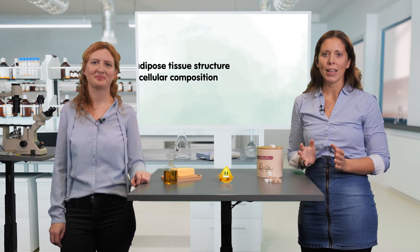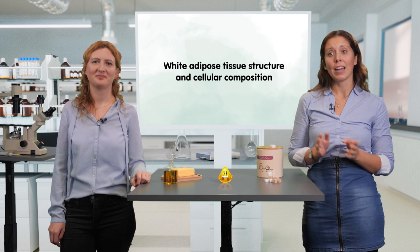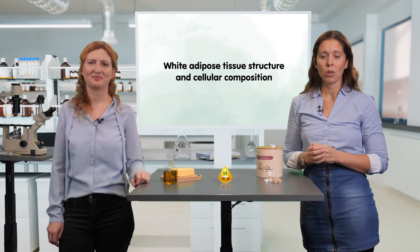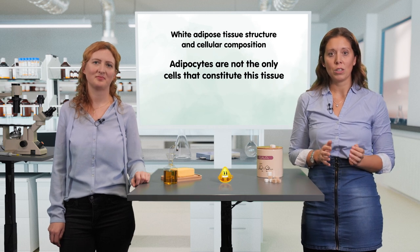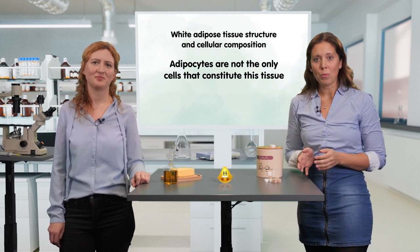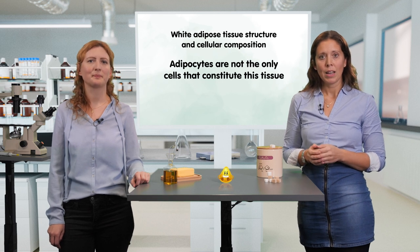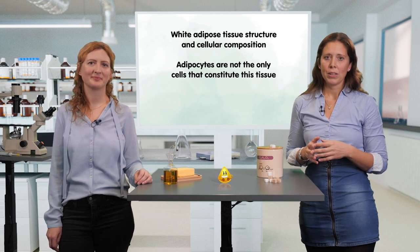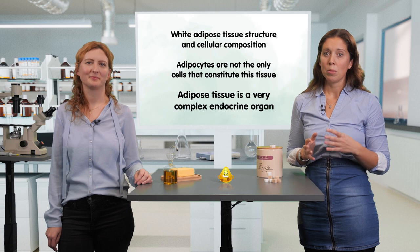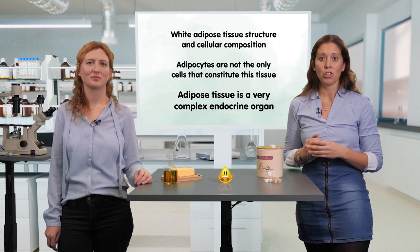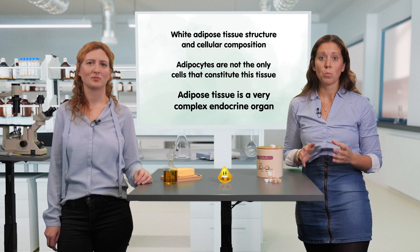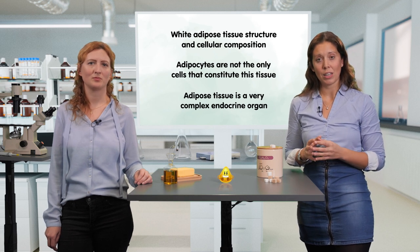In this video, we talked about the white adipose tissue structure and cellular composition. We learned that adipocytes are not the only cells that constitute this tissue, nor are they predominant in terms of numbers. Last but not least, we described the adipose tissue as a very complex endocrine organ, rather than a simple energy storage organ as it was believed to be until some years ago.